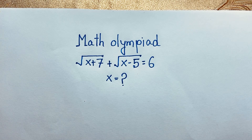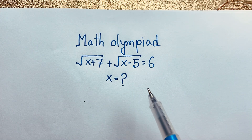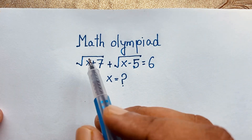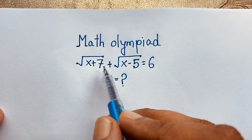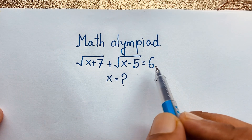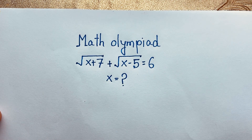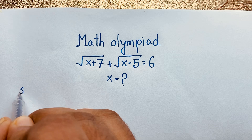Hello everyone, welcome to Russell's classroom. Today we have solved an interesting radical math question: square root of (x plus 7) plus square root of (x minus 5) is equal to 6. x is equal to what? How to solve this interesting math question?